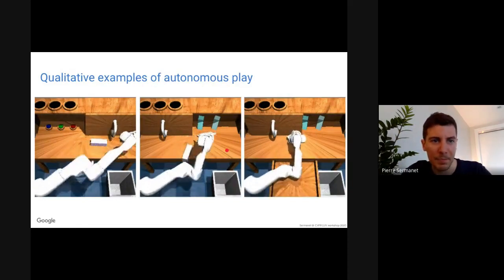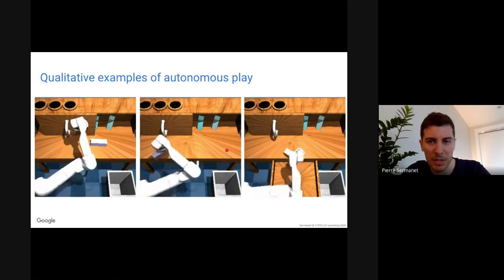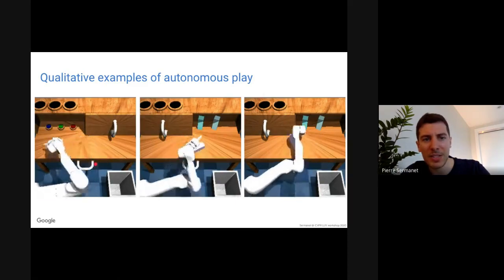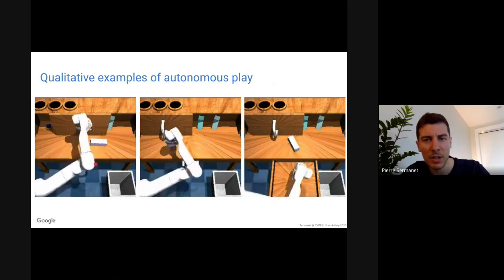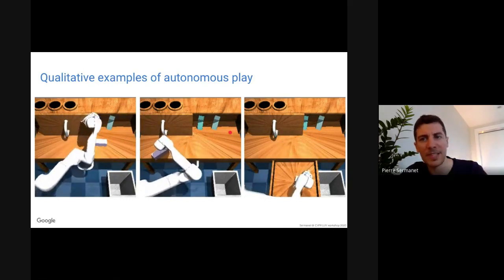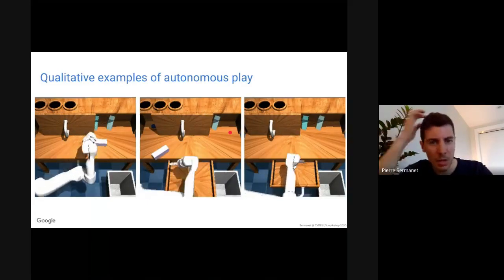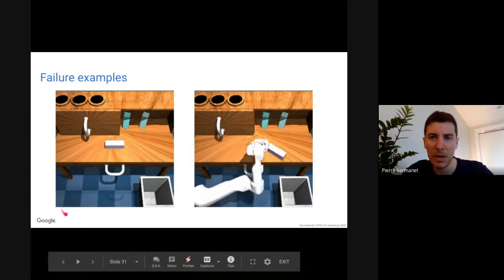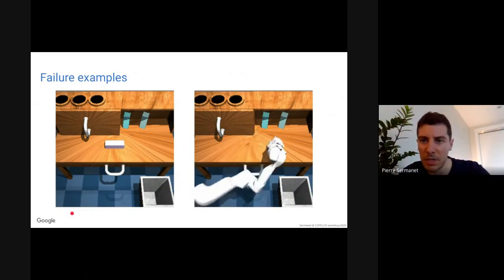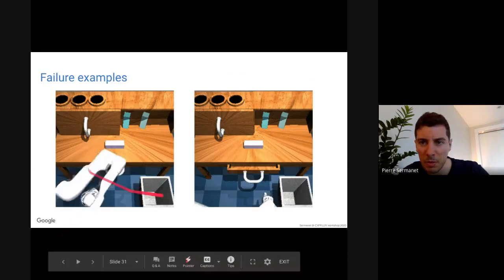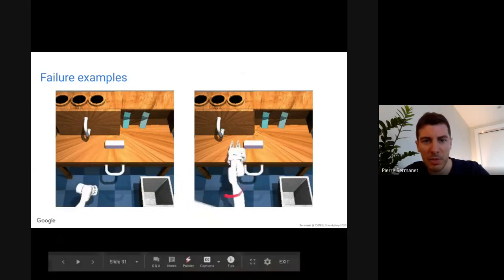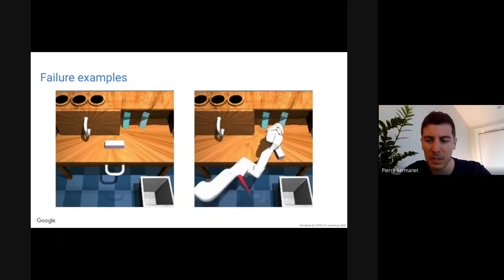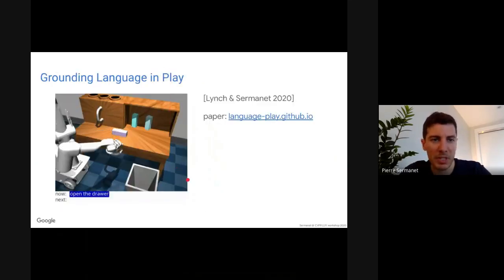Qualitatively, the robot playing by itself doesn't always look as natural as human play, but it performs sensible and functional actions — it's still useful. Failure examples include the robot going out of frame to explore regions not seen before, or doing things that aren't very informative. It's not always perfect, but we still get this 10% accuracy boost.